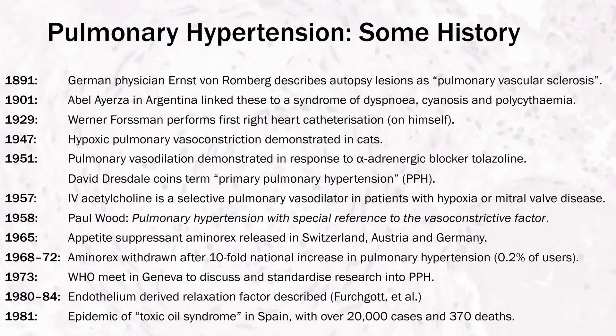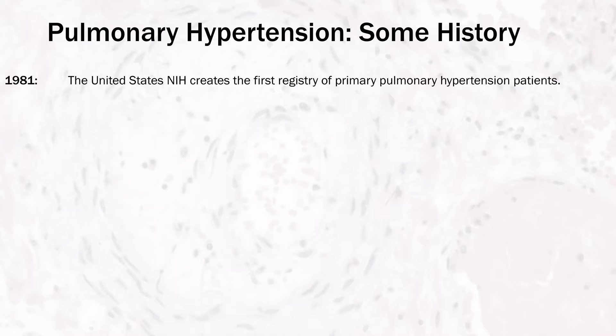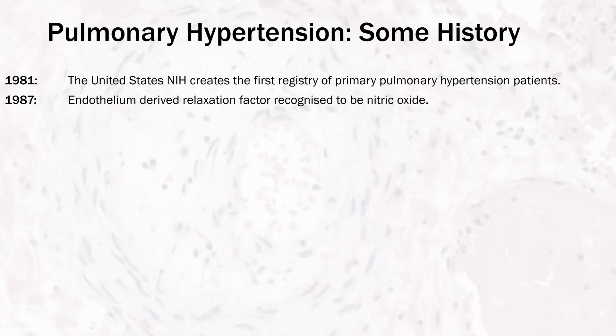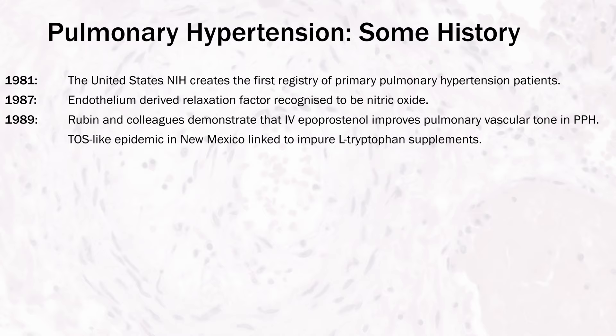In the following decade there were over 20,000 cases and 370 deaths. Following WHO recommendations, the United States NIH created the first registry of patients with primary pulmonary hypertension in 1981. In 1987, Furchgott and colleagues concluded that the endothelium-derived relaxation factor was the gaseous free radical nitric oxide — a landmark discovery that earned them a Nobel Prize in 1998. In 1989, Rubin and colleagues demonstrated that intravenous prostacyclin, known pharmaceutically as epoprostanol, improved pulmonary vascular tone in patients with PPH. The same year, around 1,400 cases in New Mexico resembled toxic oil syndrome, with about 6% developing pulmonary hypertension, subsequently linked to impure L-tryptophan supplements.